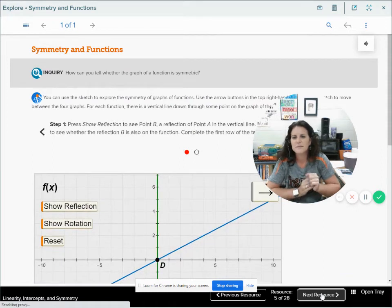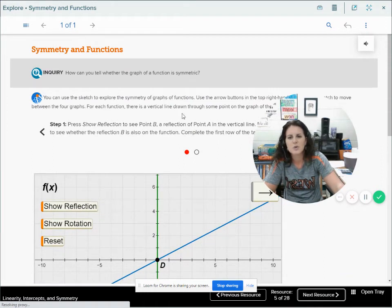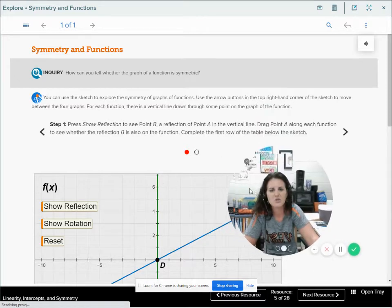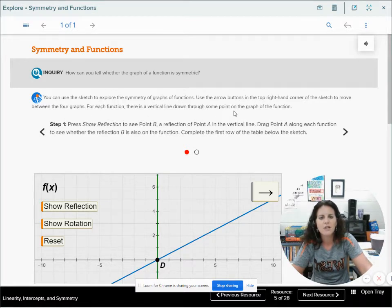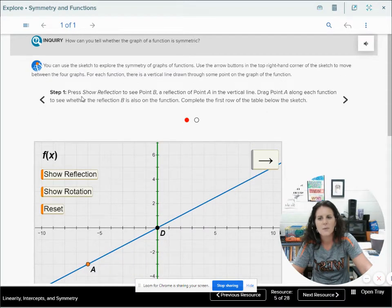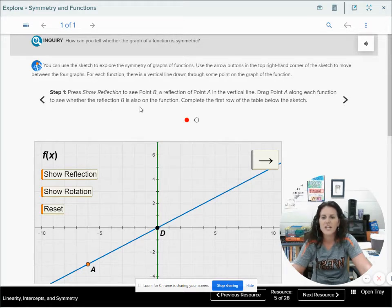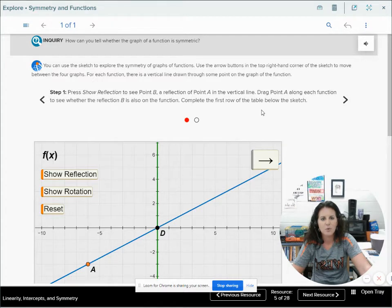Symmetry and functions. You can use the sketch to explore the symmetry of graphs and functions. Use the arrow buttons in the top right-hand corner to move between the four graphs. For each function, there is a vertical line drawn through some point on the graph. Press show reflection to see point B, a reflection of point A in the vertical line.